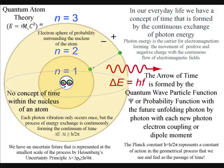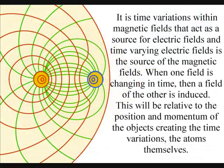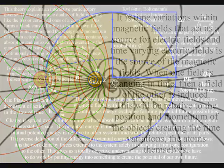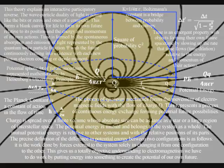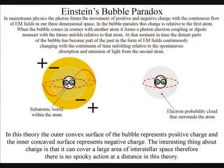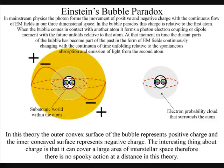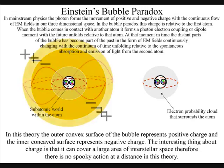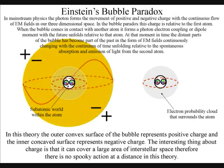In mainstream physics, the photon forms a movement of positive and negative charge with the continuous flow of electromagnetic fields in our three-dimensional space. In the bubble paradox, this charge is relative to the first atom. In this theory, the outer convex surface of the bubble represents positive charge and the inner concave surface represents negative charge.